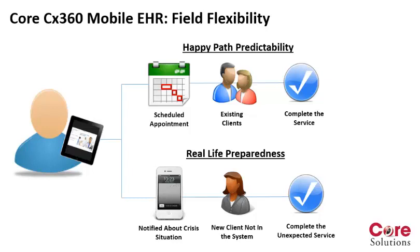Core's CX360 Mobile EHR has built-in field flexibility. We can support happy path predictability where there's a scheduled appointment, the client exists, and the service can be completed. But we can also support real-life preparedness where we're notified about a crisis situation for a new client that doesn't exist in the system, and therefore a new record needs to be created, and we can then complete the unexpected service.